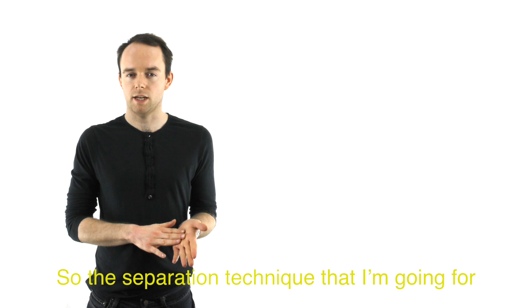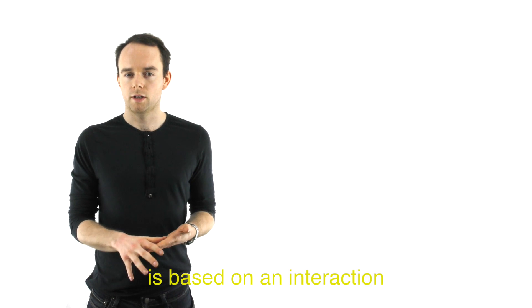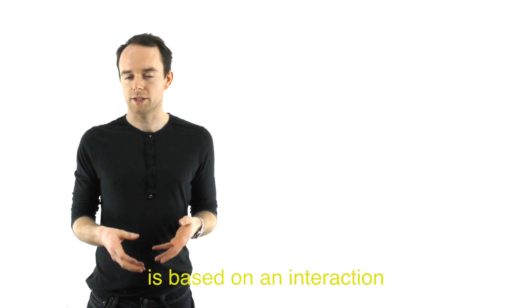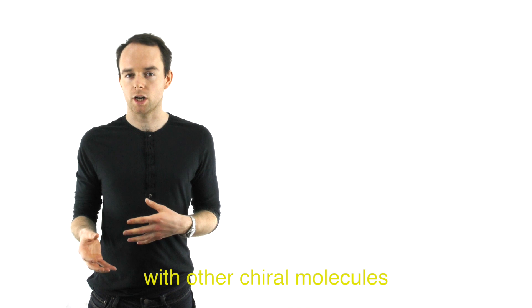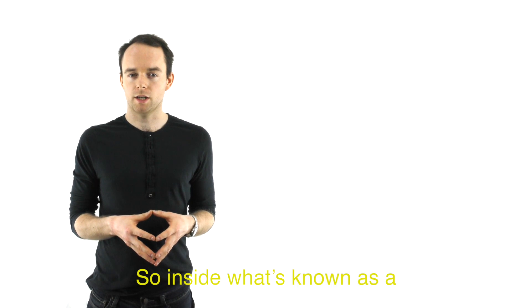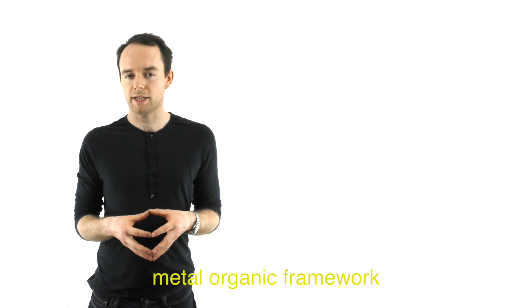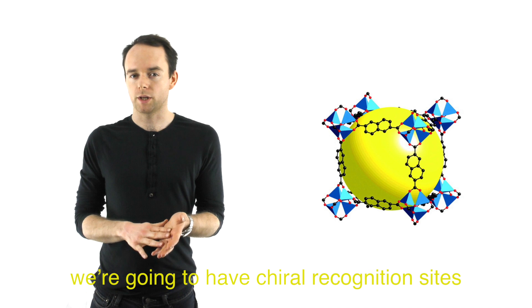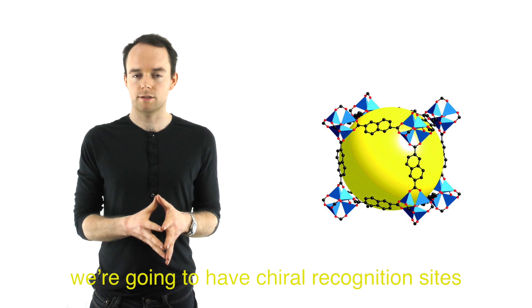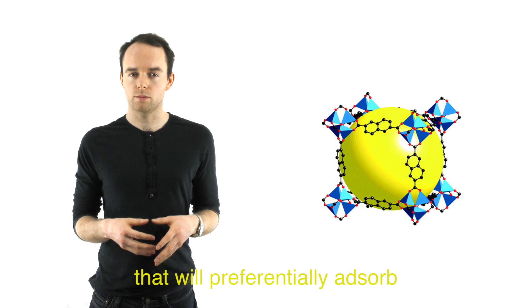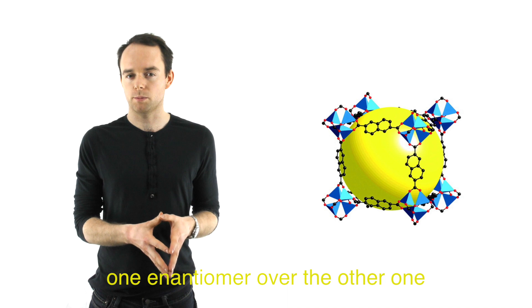So the separation technique that I'm going for is based on an interaction with other chiral molecules. Inside what's known as a metal organic framework, we're going to have chiral recognition sites that will preferentially absorb one enantiomer over the other one.